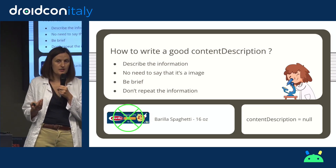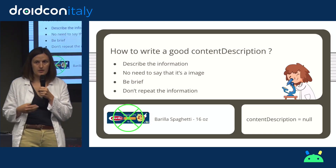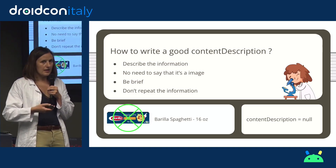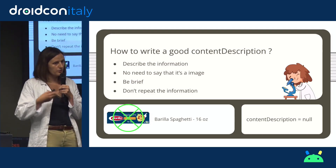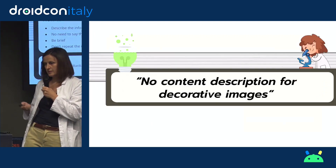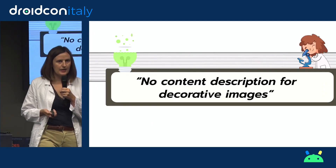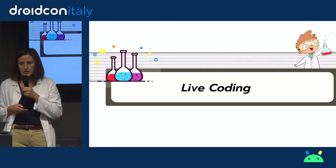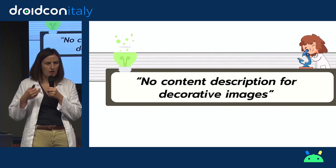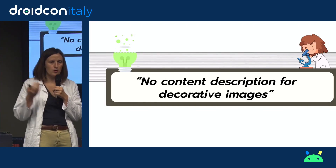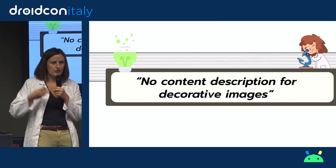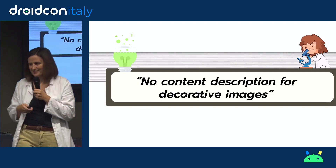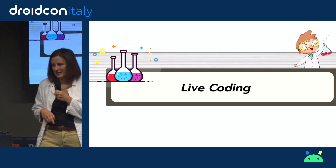Maybe we can improve the product label text instead of adding a content description. Setting contentDescription to null means TalkBack will ignore the element entirely and not focus on it. The last advice: do not add content descriptions on decorative images — background images, app logos, things that are just decorative. Don't tell that to designers.